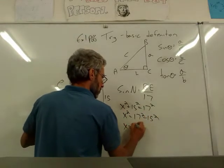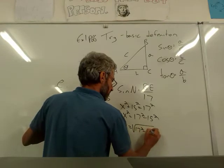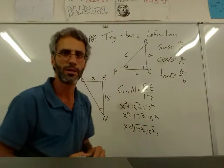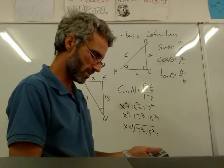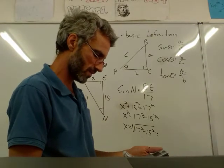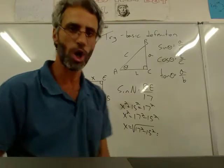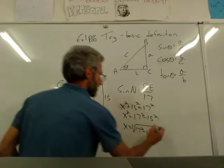And then I'll say, okay, X equals square root 17 squared minus 15 squared. Use a calculator. Square root of 17 squared minus 15 squared. Boom. I've got 8. So that's 8.